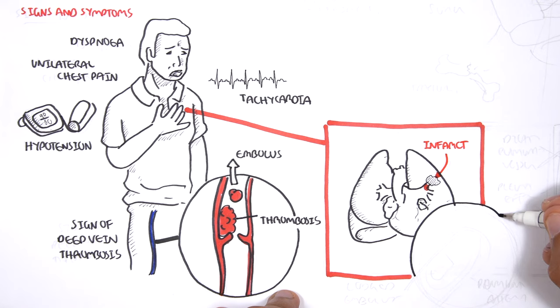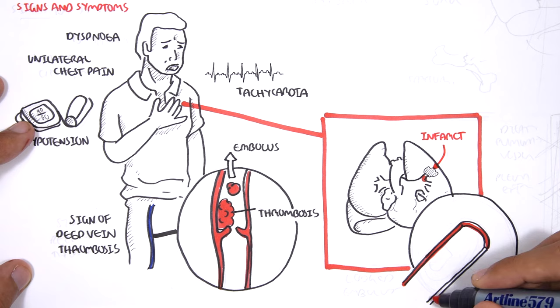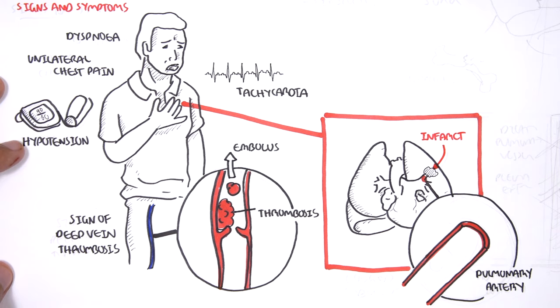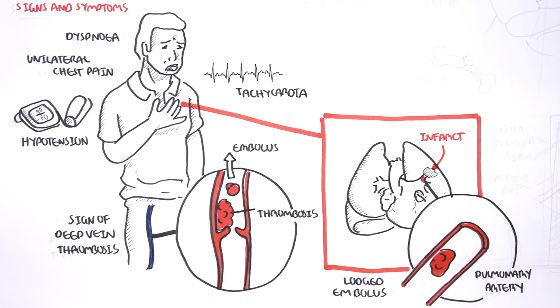Pulmonary embolism can result in an infarct to lung tissue. Zooming into this area, we can see the pulmonary artery and the embolus has lodged in this area resulting in pulmonary embolism.